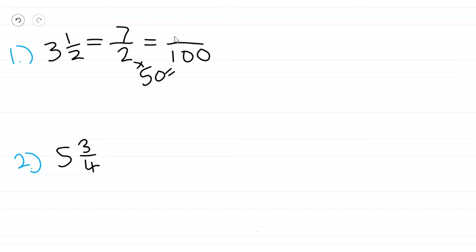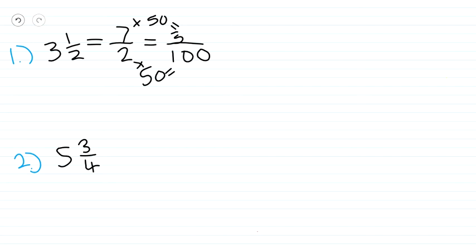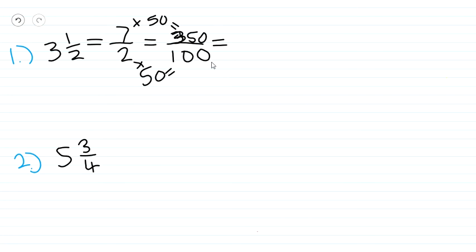Now we're going to take that 50 and place it at the top in order to figure out the numerator of the equivalent fraction. So we say seven times 50, which is equal to 350. So we have 350 over 100.